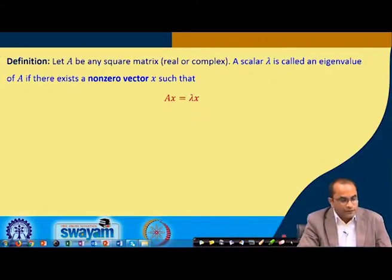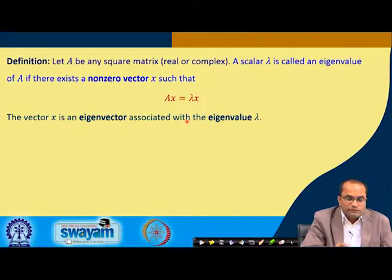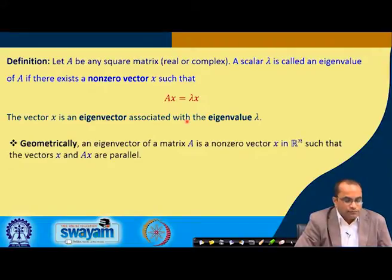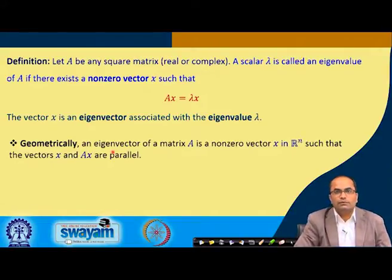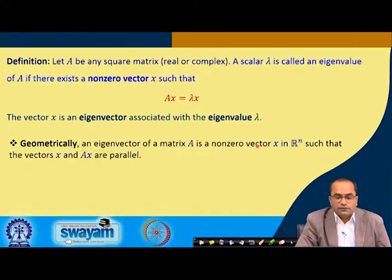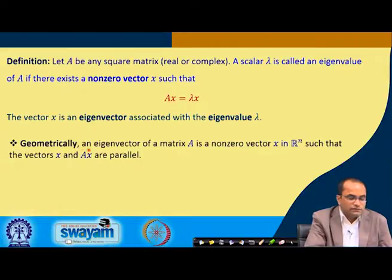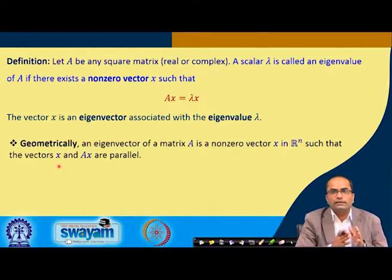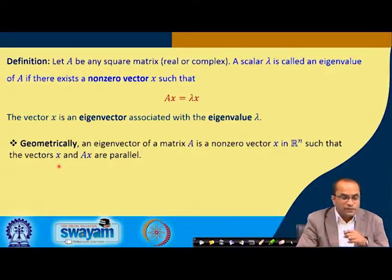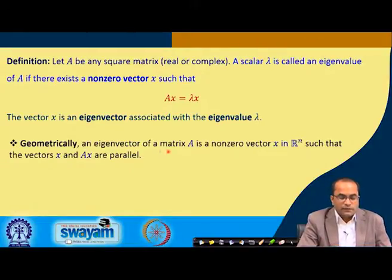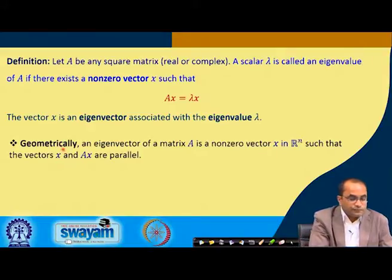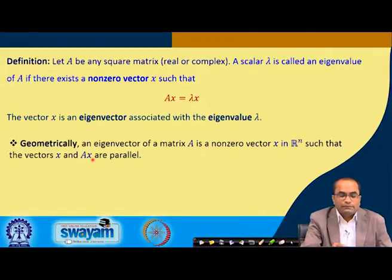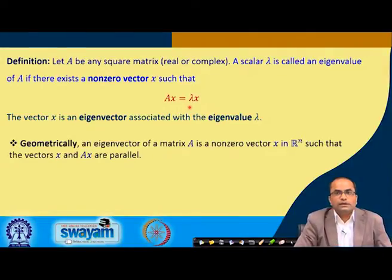The vector x is the eigenvector associated with eigenvalue λ. Geometrically, an eigenvector of matrix A is a non-zero vector x in R^n such that x and Ax are parallel — which we saw in the previous example where v and Av had the same direction but different lengths. The eigenvalue λ accounts for the change in magnitude.